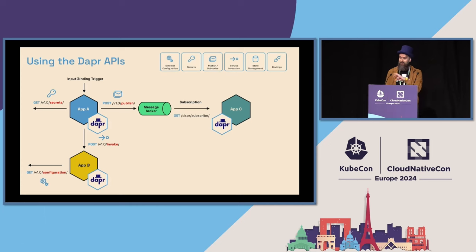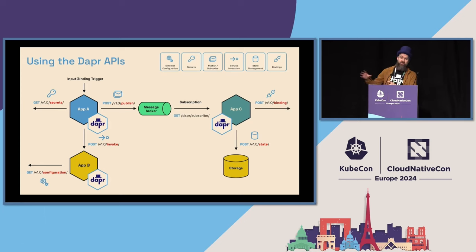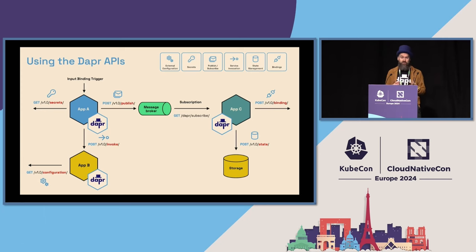Then another Dapr service subscribes to the same topic and posts some state using the state endpoint. Finally, a Dapr output binding sends a message via Twilio, for instance. This is just one of the many ways you can combine different Dapr APIs to really speed up microservice development.